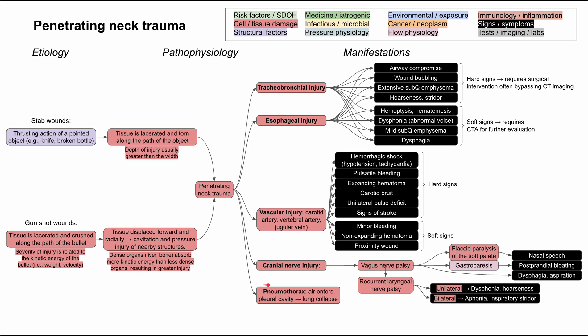Another major injury that can happen from neck trauma is pneumothorax. The lungs go all the way up into the shoulders, so a downward-facing penetrating neck wound can reach the lungs and cause a pneumothorax. This is where air enters the pleural cavity from trauma, usually from lung damage, leading to lung collapse. The pleural space is normally a negative pressure space that helps the lungs expand with the chest wall during inspiration, so if it's breached, you'll have lung collapse.